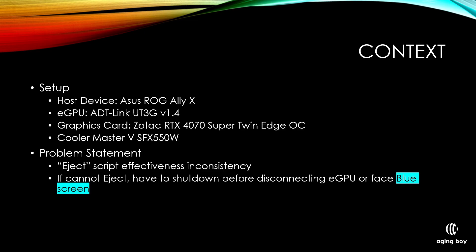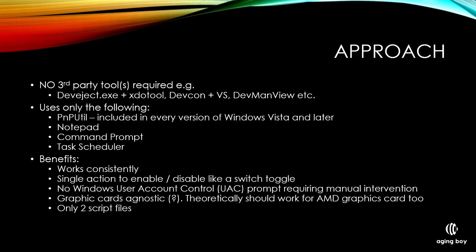Why do I have this method to show? Because I've been using the EJECT script and I find that its effectiveness was very inconsistent. When it works, it works very well, but there are times it's very frustrating that it doesn't work. I've tried multiple ways — checking the processes that use the eGPU, trying to end tasks — but those just don't seem to work. If it cannot eject, ultimately I have to shut down before disconnecting the eGPU, or eventually I need to face the blue screen of death.